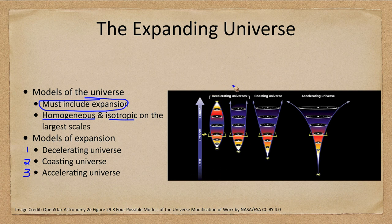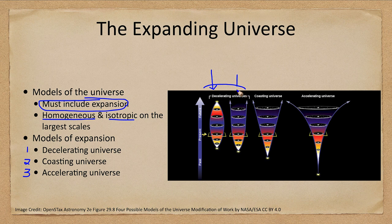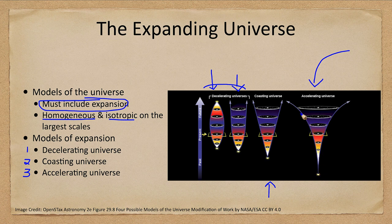So in a decelerating universe, you have two cases. It can eventually slow down enough to stop and come back down and collapse to a single point again. It can just barely expand outward forever in the second model here. Or you can have the coasting universe, which does expand forever and always has the same value for Hubble constant. But where we appear to be is the accelerating universe that the universe started out, and it's been going faster and faster and faster in its acceleration over time.